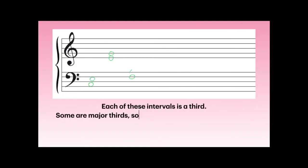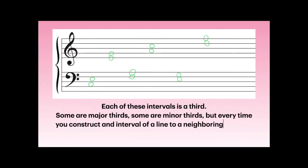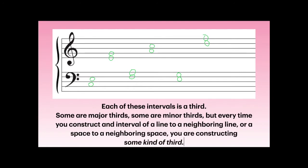Each of these intervals is a third. Some are major thirds, some are minor thirds, but every time you construct an interval of a line to a neighboring line or a space to a neighboring space, you are constructing some kind of third. Space to a space — third. Line to a line — that's another third. Whenever we're using neighboring lines or neighboring spaces, we're always constructing some kind of third.